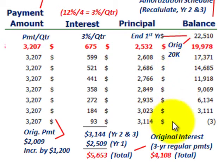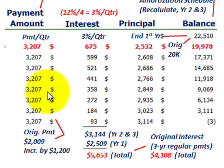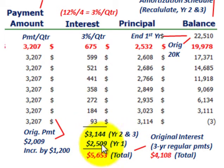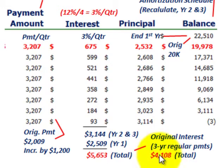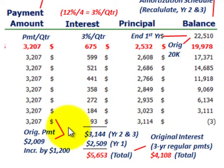We've amortized the loan to zero over years two and three. Total interest for years two and three was $3,144, plus year one interest of $2,509, giving a total interest cost of $5,653 under this special deal. Had we followed the regular payment schedule, we would have paid only $4,108 in interest — so the no-payment deal cost an extra $1,545 in interest.